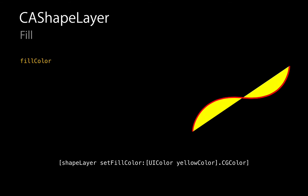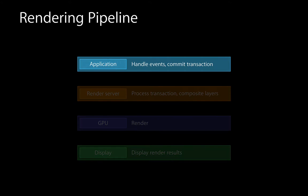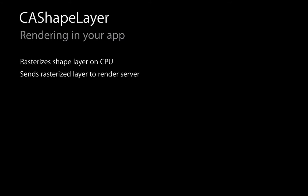Shape layers can have a big impact on rendering performance. When you have a shape layer, we have to rasterize it on the CPU within your application — we ask the shape layer to compute itself and draw into essentially an image for later compositing. This process can get very expensive in terms of CPU time, especially with a very complex path. The more complex it is, the longer it takes to draw and prepare.